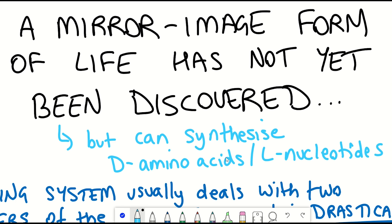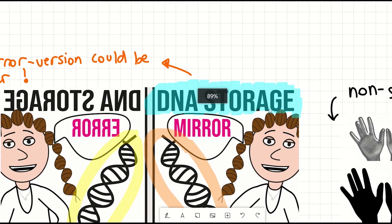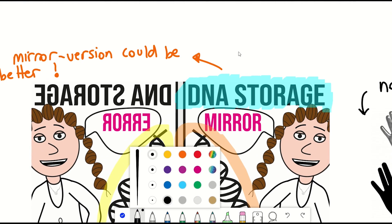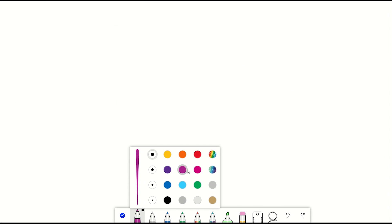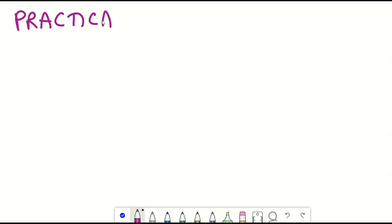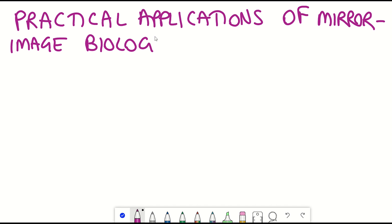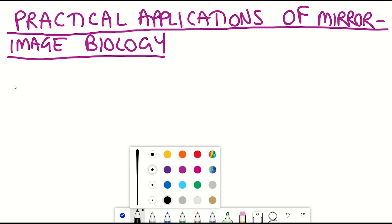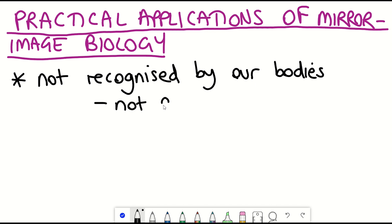So why would we want to further understand this mirror world of biology? And does it have any potential therapeutic use or any other uses that might be interesting? So there are many potential practical applications of mirror image biochemistry. For example, because as I've mentioned, a living system would usually deal with the mirror image version and the normal version in completely different ways.